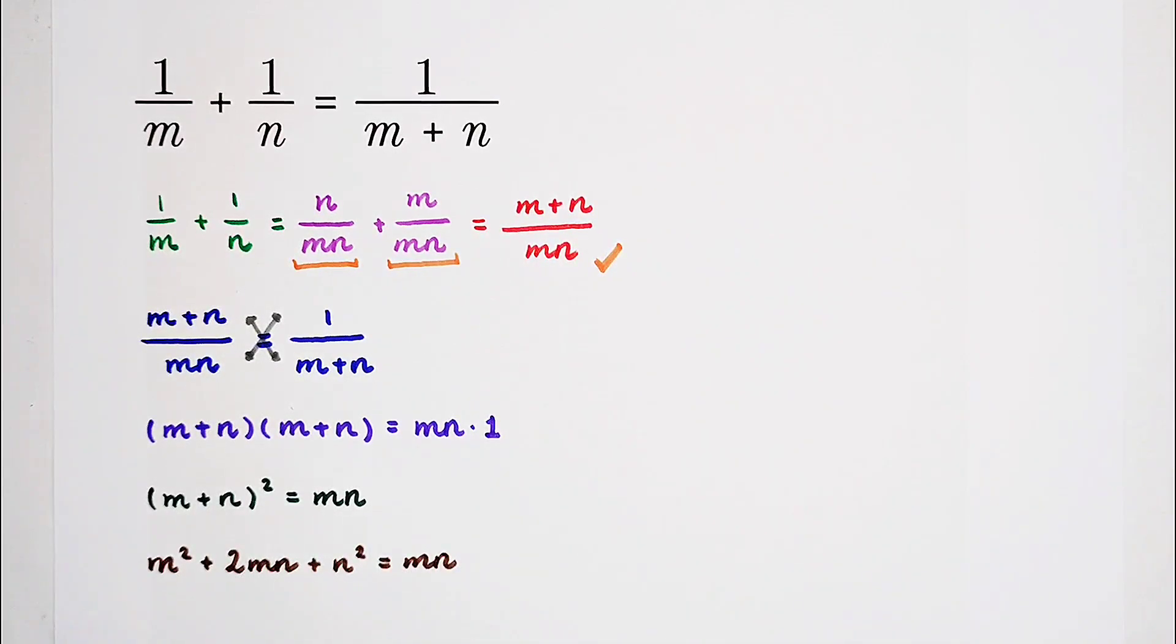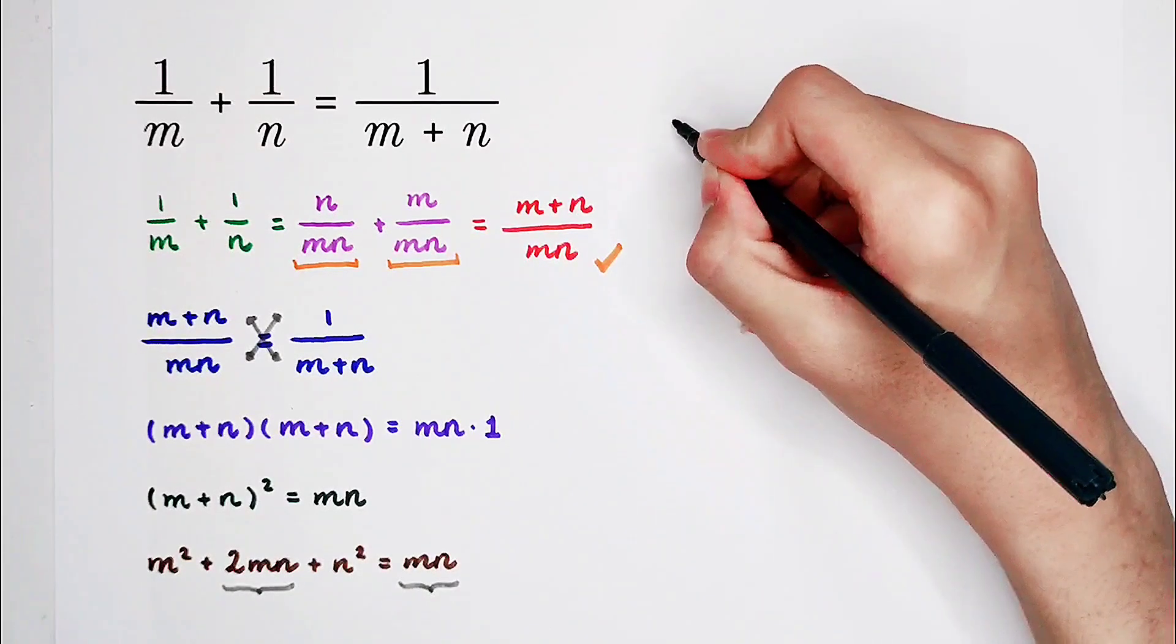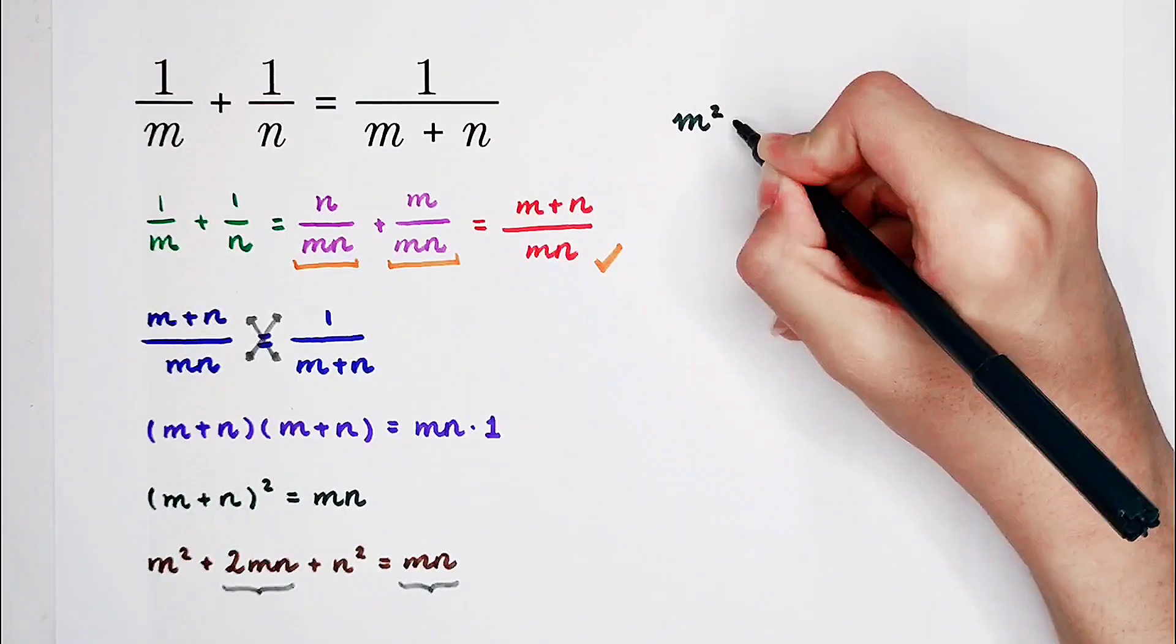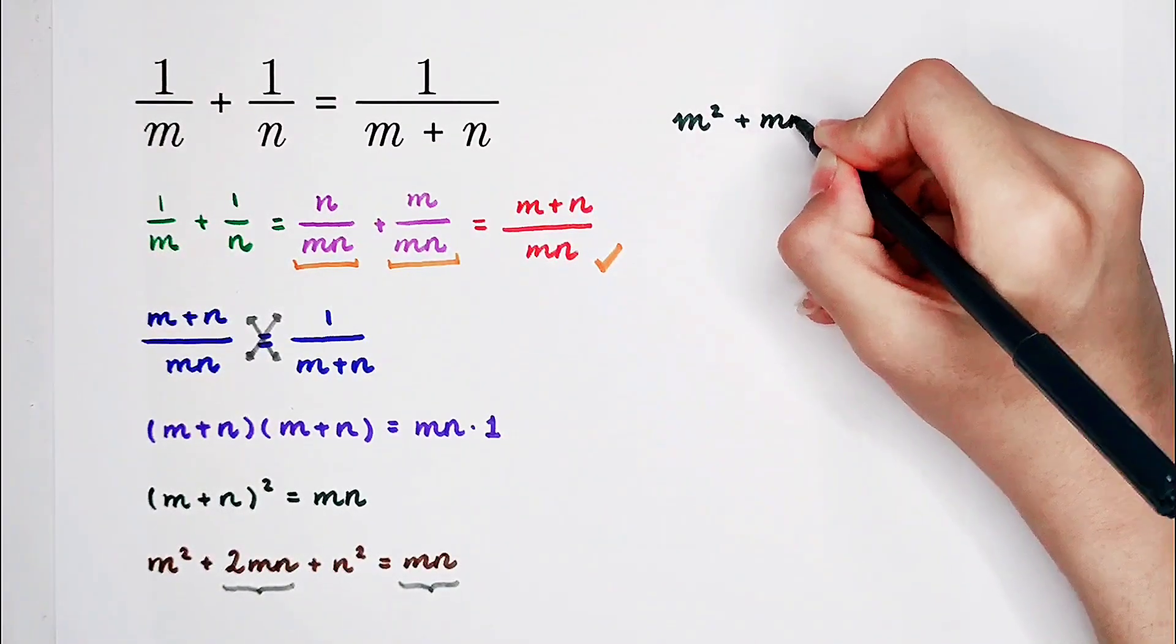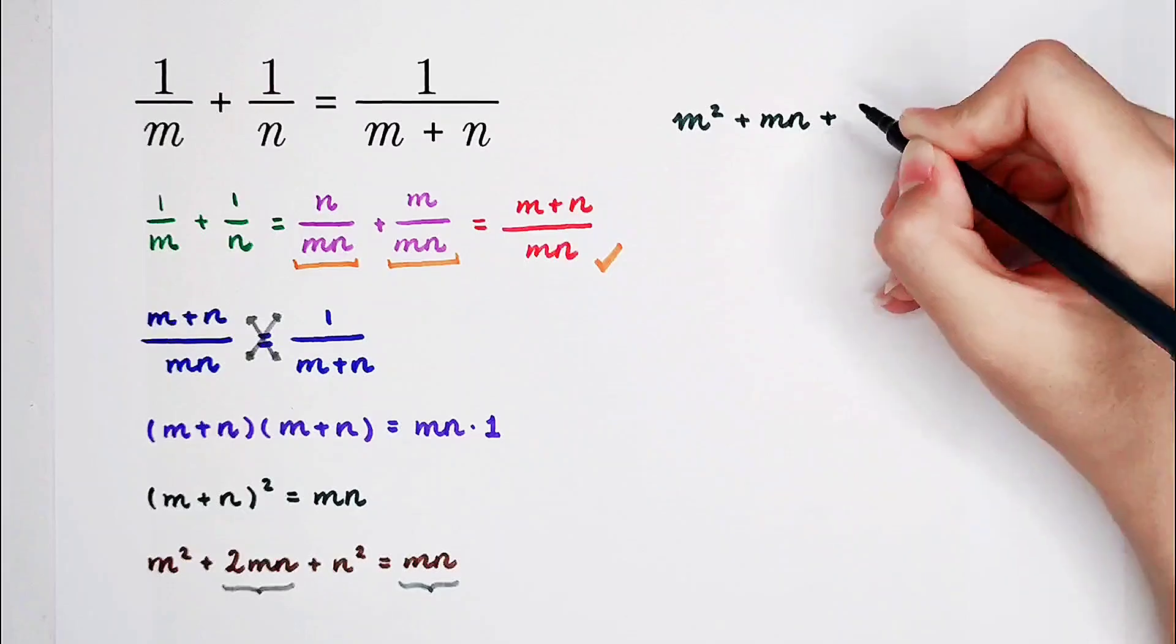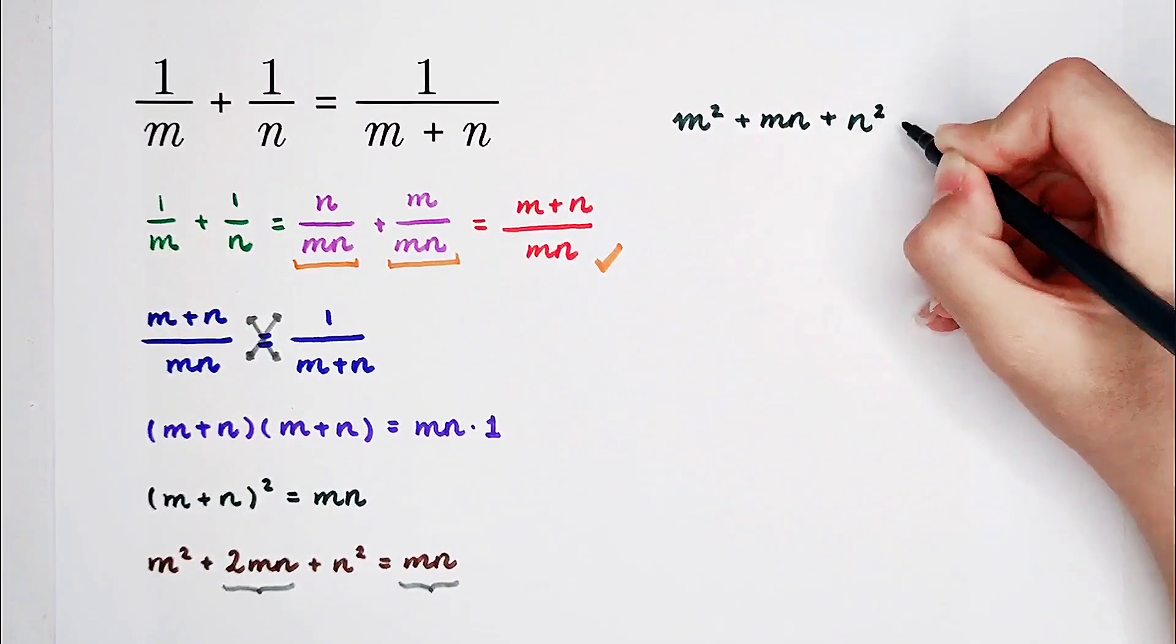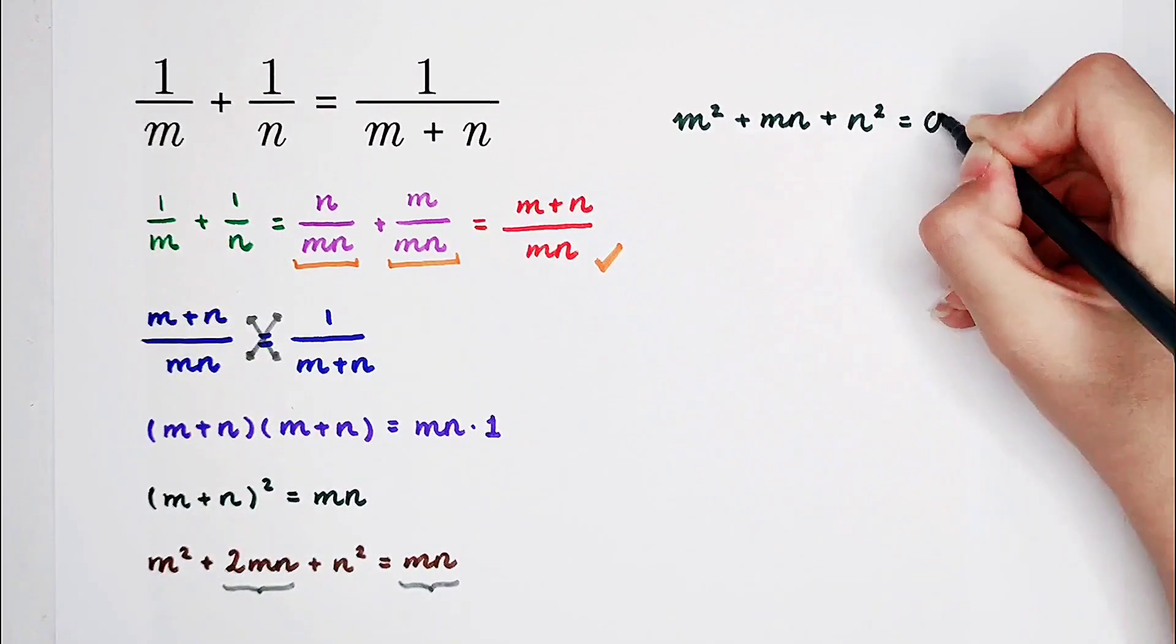Now the left-hand side has 2 times mn, and the right-hand side has 1 mn. We can subtract m times n on both sides, and the left-hand side will be m squared plus 2mn minus mn is mn—just 1 mn—and then plus n squared. The right-hand side will be 0.